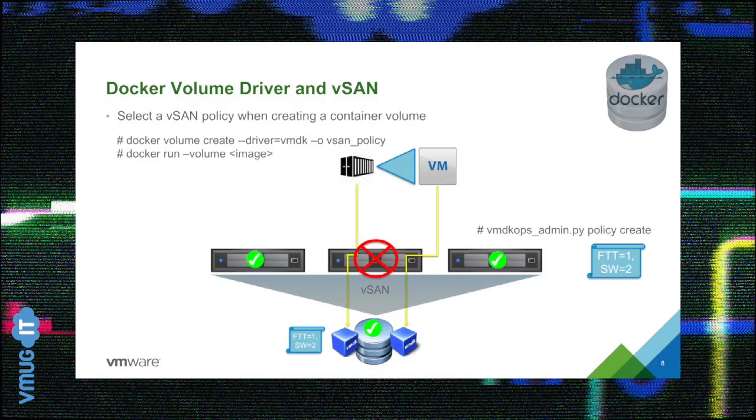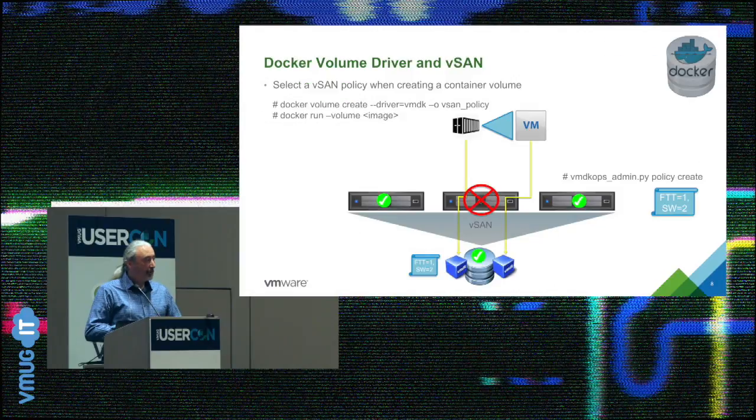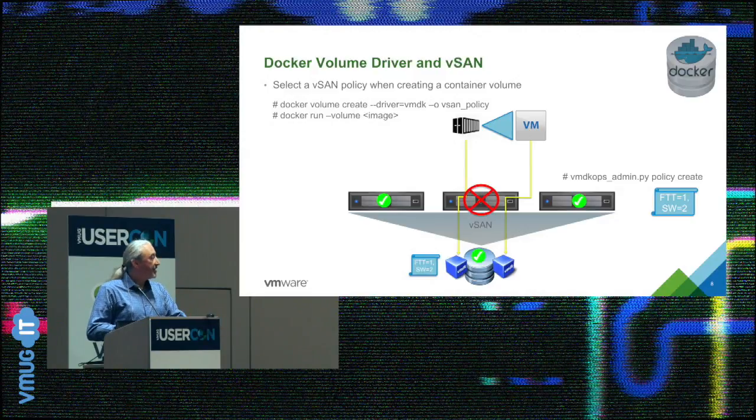The same is true for vSAN - you can use these volumes on vSAN as well. With vSAN it's all policy-driven storage, so there's a CLI command to create a policy, and through the Docker volume commands you can specify the policy you wish to use with that particular volume. Once the volume is created you can do your Docker run and consume that volume. It works on VMFS, NFS, and vSAN. The great thing about vSAN is that it's highly available storage - in a three-node cluster, if you lose one host you still have a quorum and your volume stays persisted.